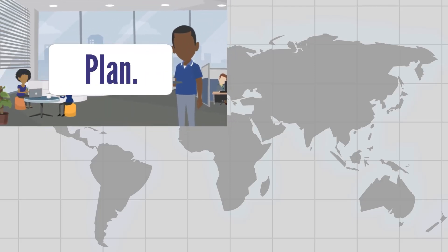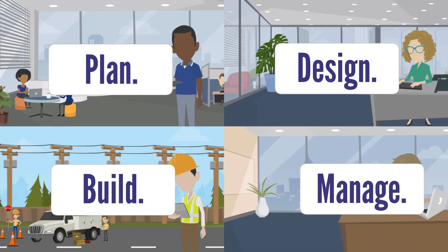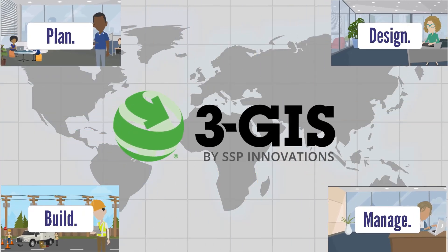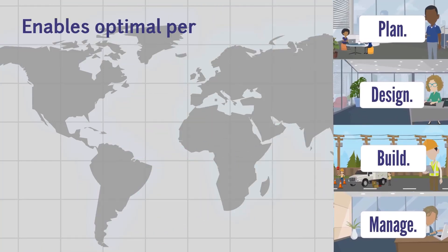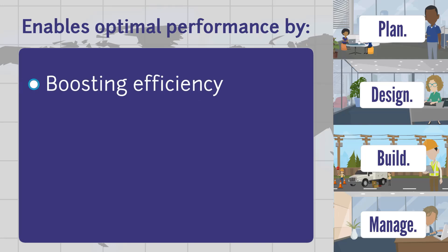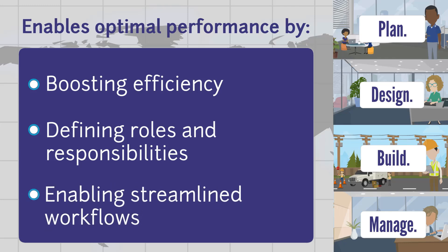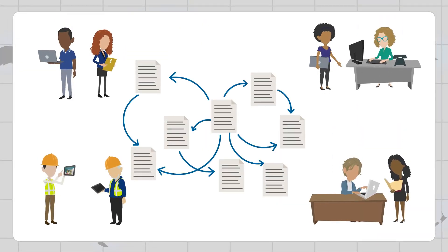From planning your network, to designing it, to building it, to managing it, 3GIS, as a single system of record, enables optimal performance in all phases of network development by boosting efficiency, helping define roles and responsibilities, and enabling streamlined workflows. While system configuration and workflows are vital to an efficient operation, they are also often specific to your organization's needs.